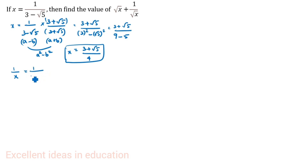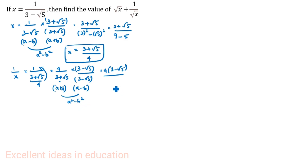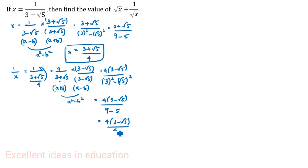1 by x is equal to 1 divided by (3 plus root 5 by 4), so 4 goes up giving 4 by 3 plus root 5. Here there is a plus in the denominator, so we rationalize by multiplying by 3 minus root 5 divided by 3 minus root 5. Using a squared minus b squared: a is 3, b is root 5, denominator is 9 minus 5 equals 4. The 4s cancel.